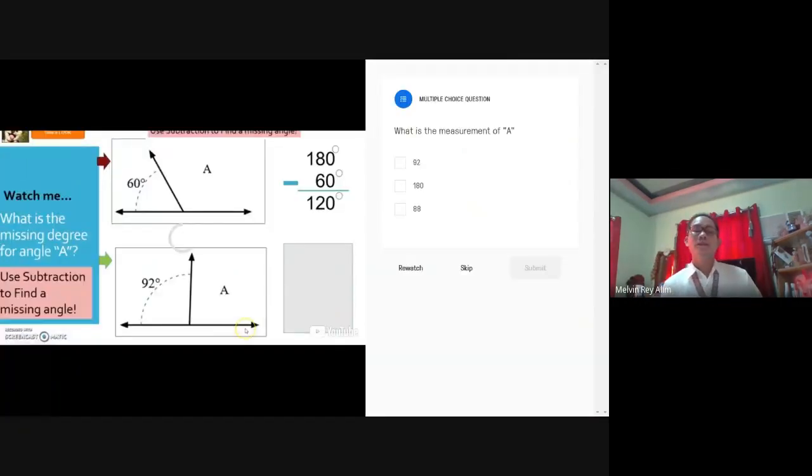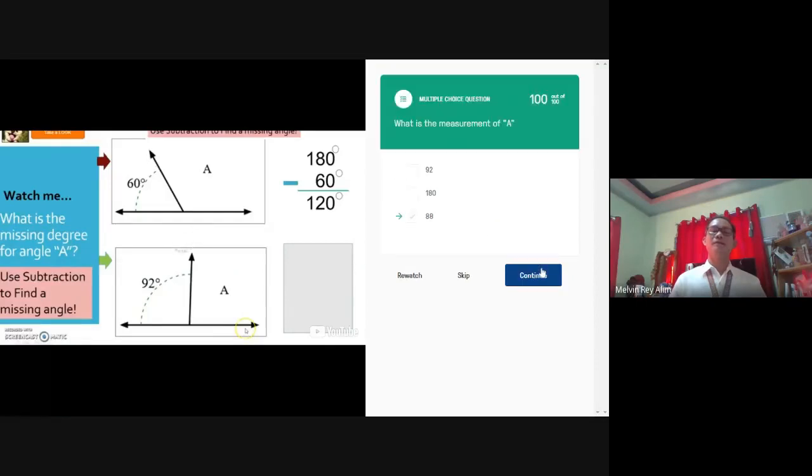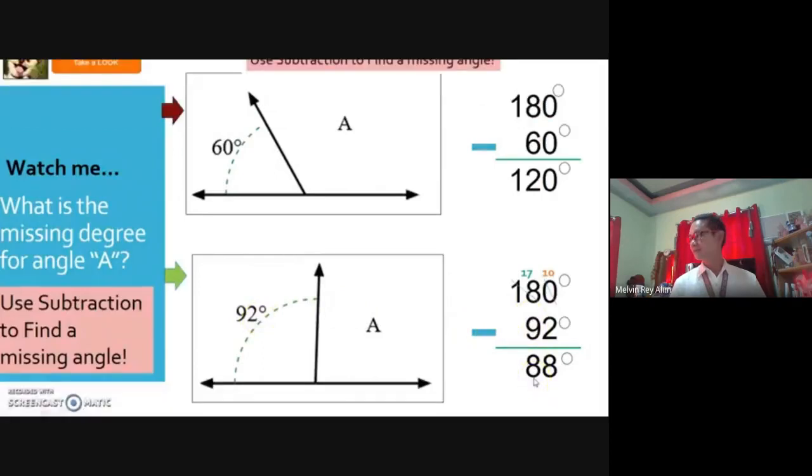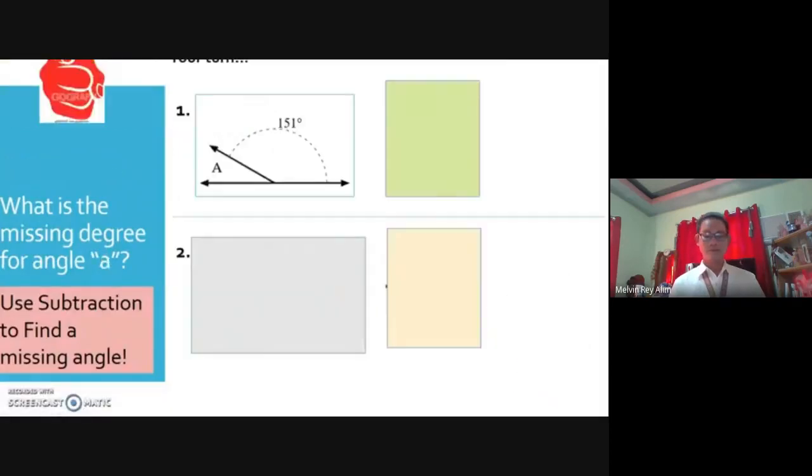Question, what is the measurement of A? Traces, 92. Next, 180. Next, 88. Answer, submit, all right, there you go. So I'm going to take 180 degrees minus the given angle of 92 and it gives me 88 degrees total for my missing angle A.